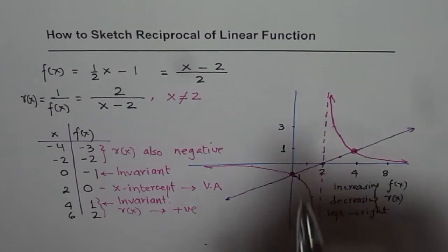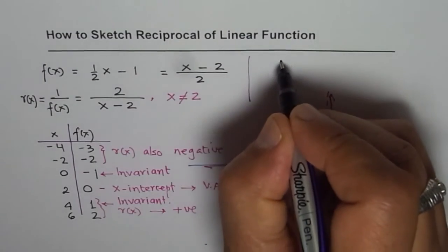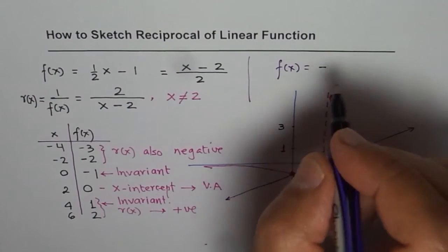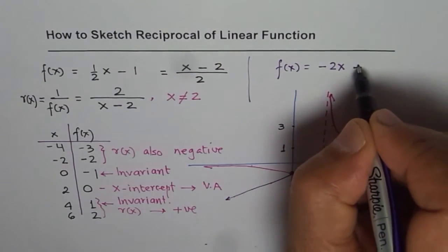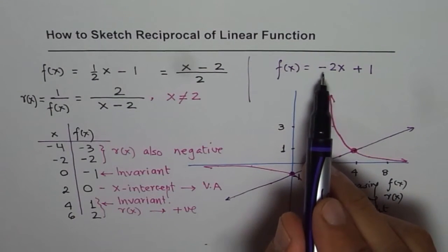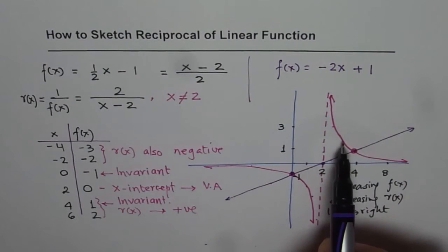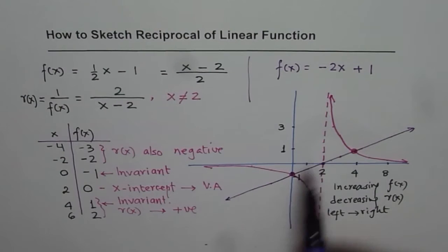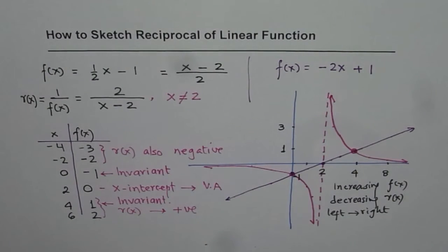As an exercise, try f of x equals negative 2x plus 1 and sketch its reciprocal. Since the slope is negative, the function will be decreasing, and in that case the reciprocal will always be increasing. That is an important thing to observe when you plot the reciprocal of this function.